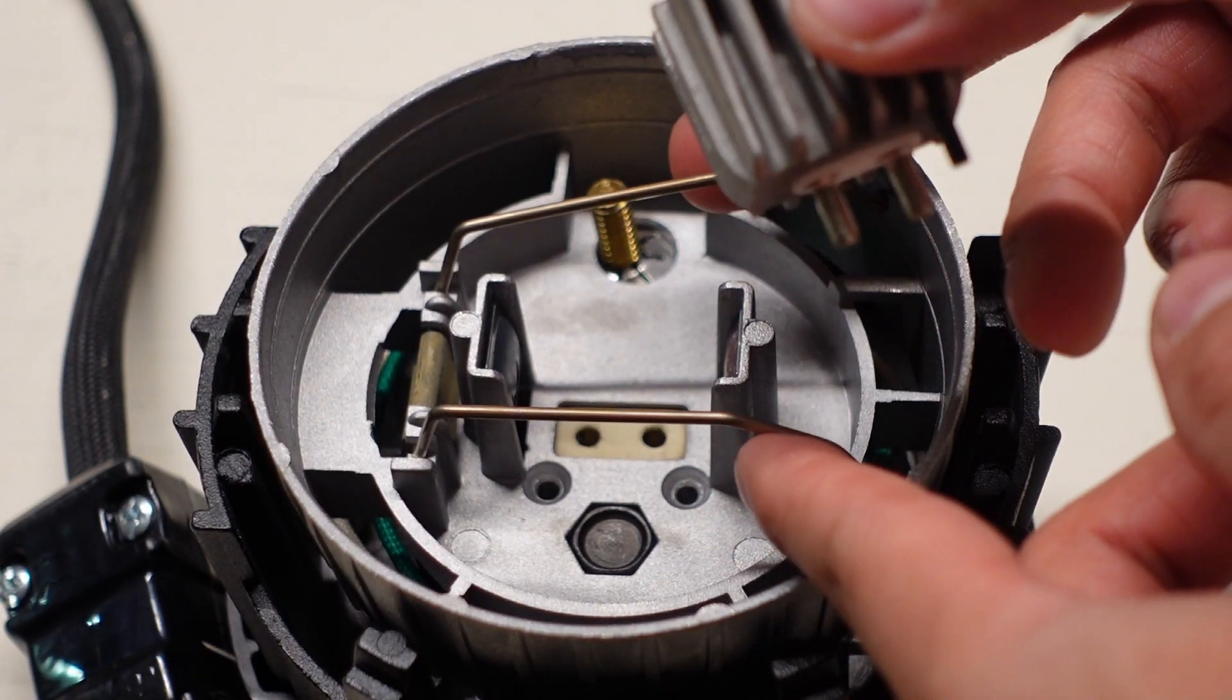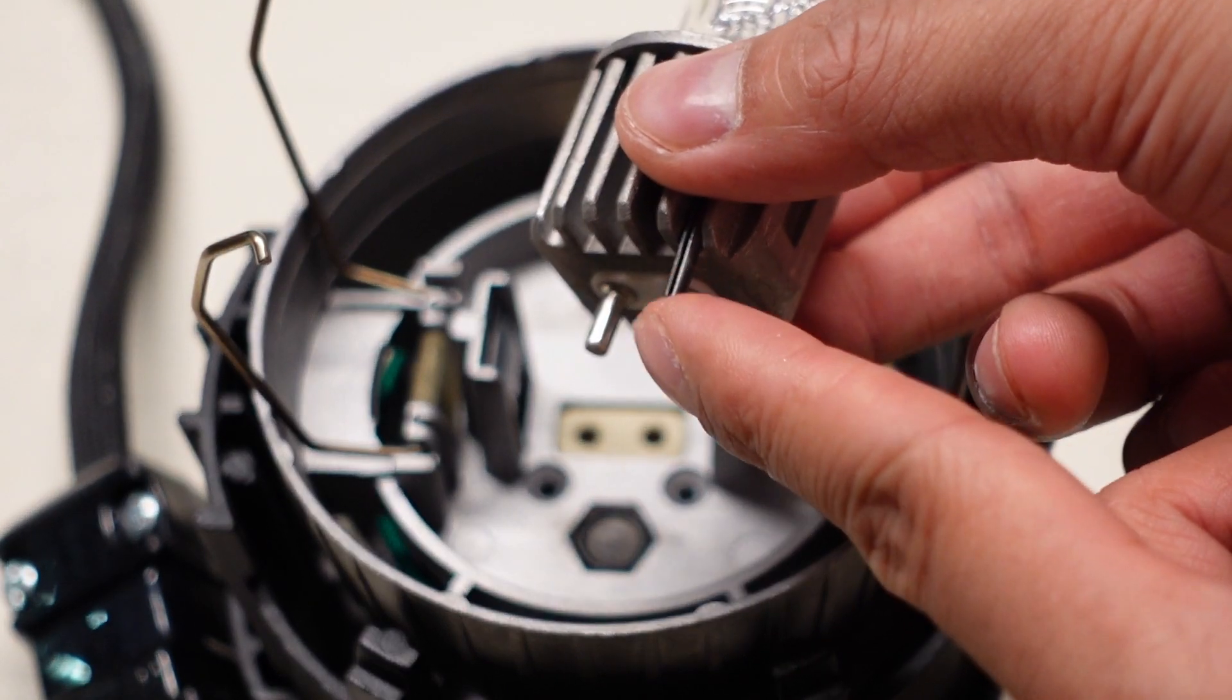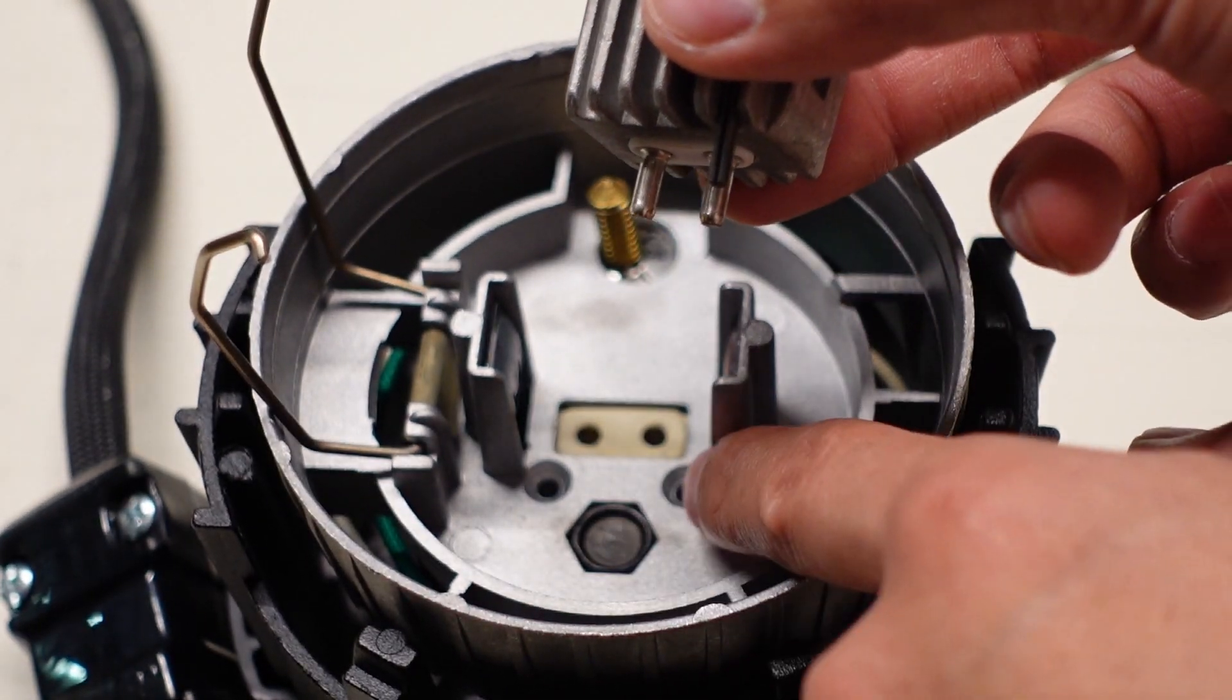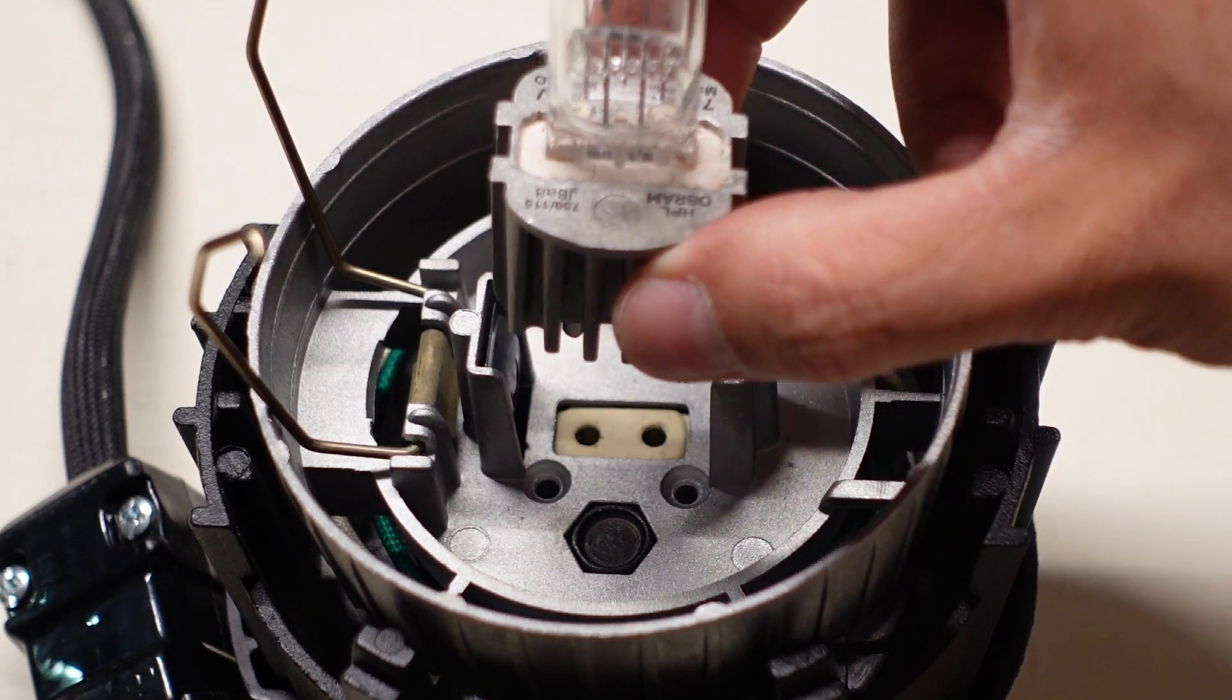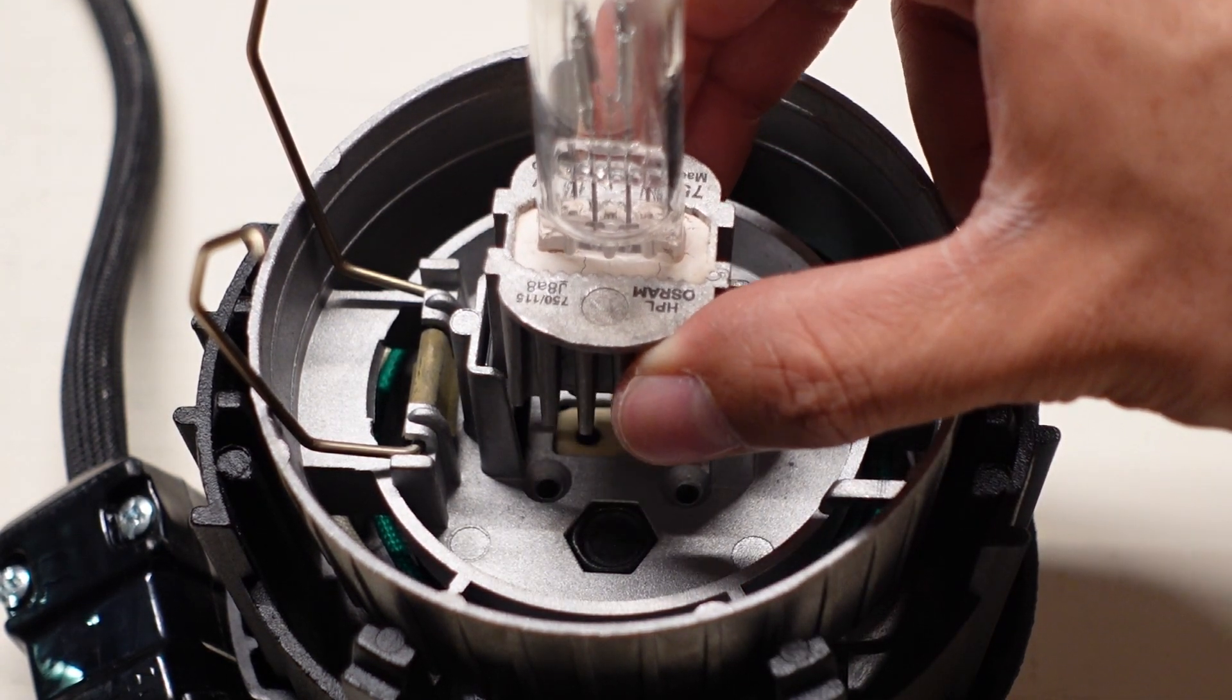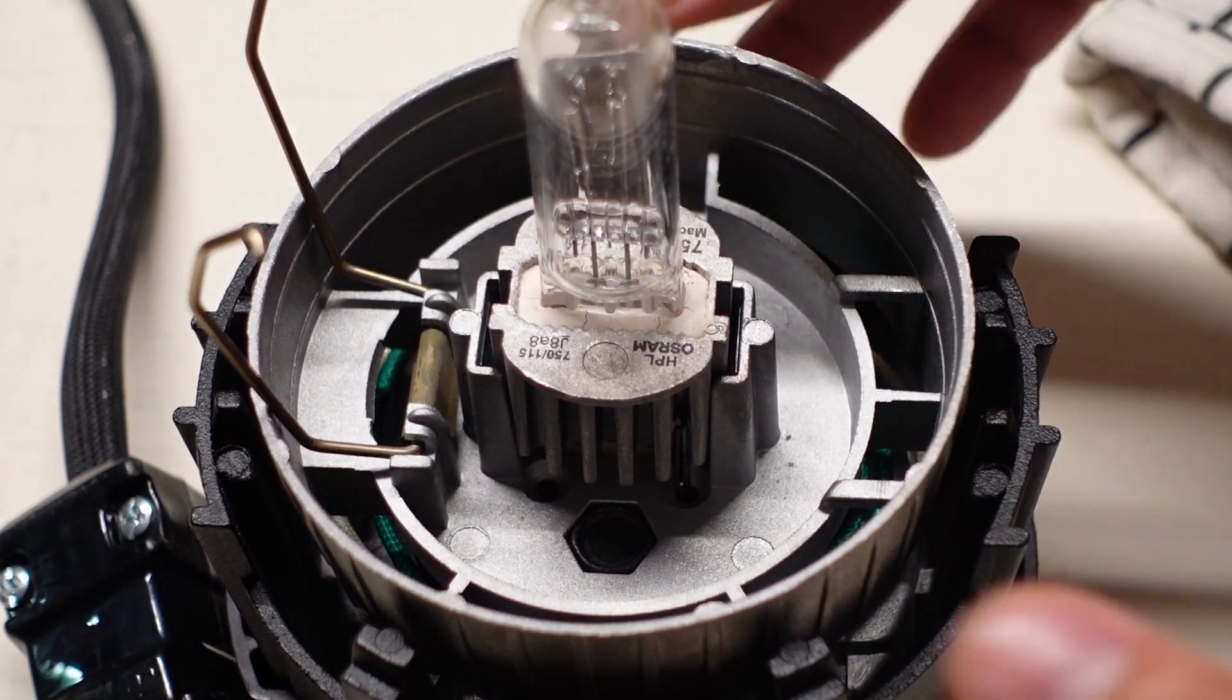Just take your time, try to hold the bulb from the base and not from the glass, and just wiggle it out until you have the bulb out. Don't be scared to use a little bit of force just to pull it out, because it did take me a while to take this bulb out.